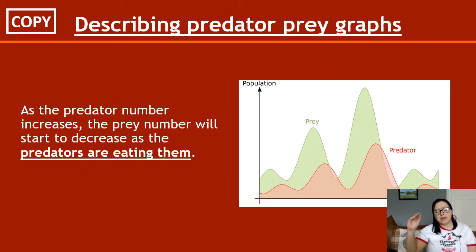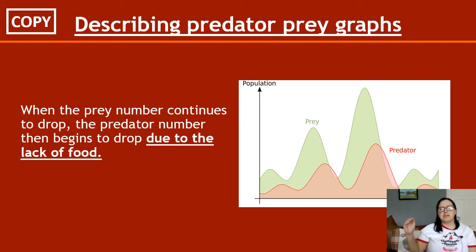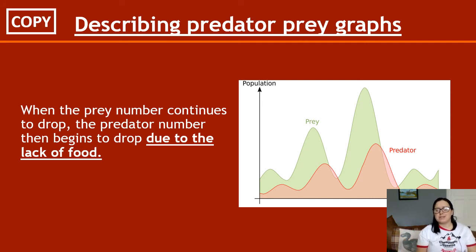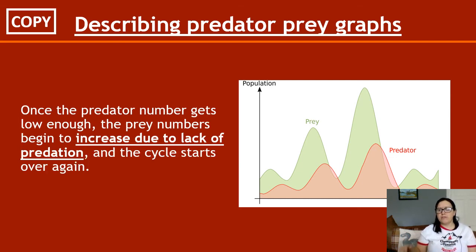As predator numbers start to increase, prey numbers start to drop because the predators are eating them and bringing their numbers down. As prey numbers continue to drop, predator numbers will drop because there is a lack of food — they've essentially eaten all of the prey in that area, so predator numbers drop slightly after as some animals start to starve to death. Once predator numbers get low enough, prey numbers start increasing again due to the lack of predation, and the cycle essentially starts all over again.